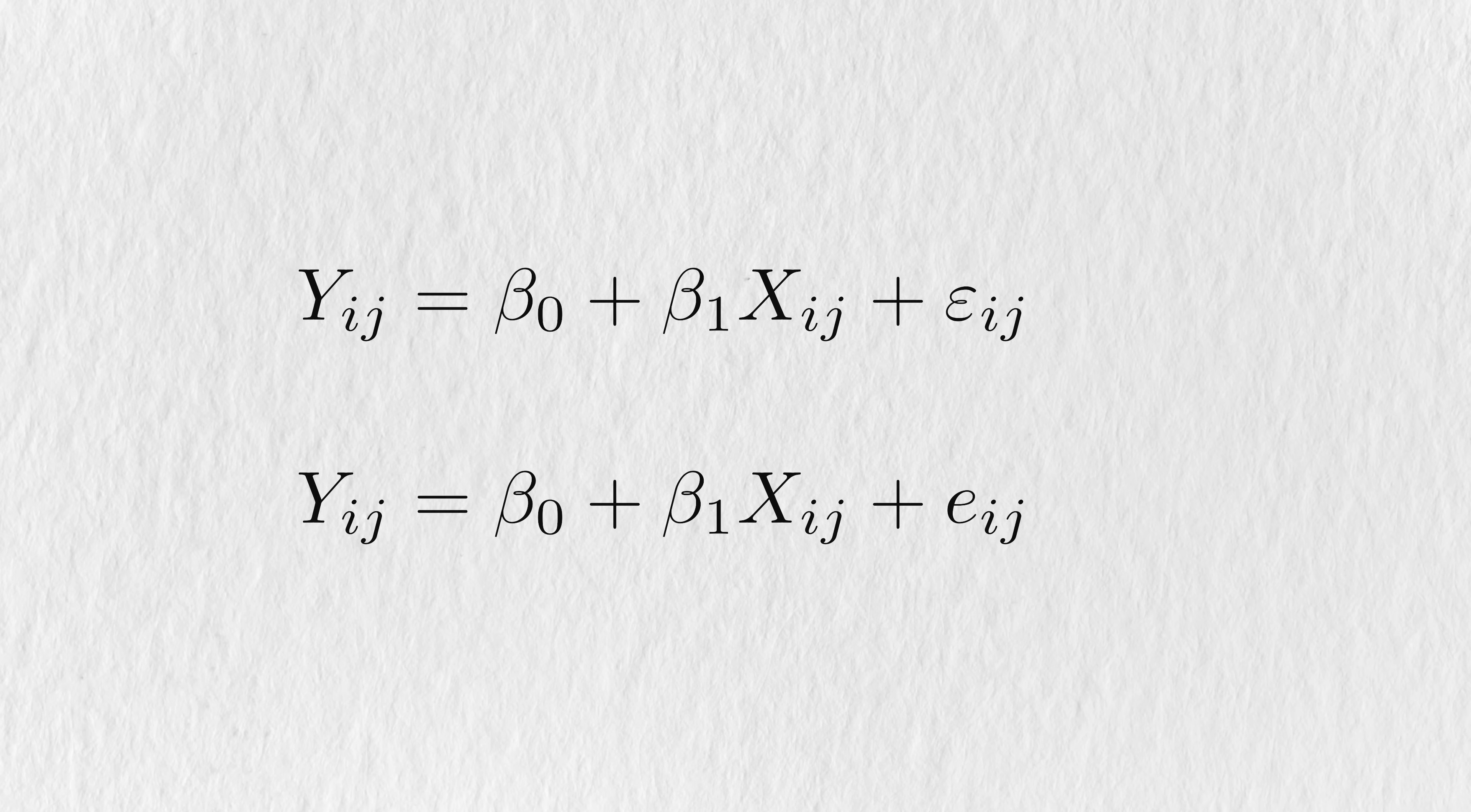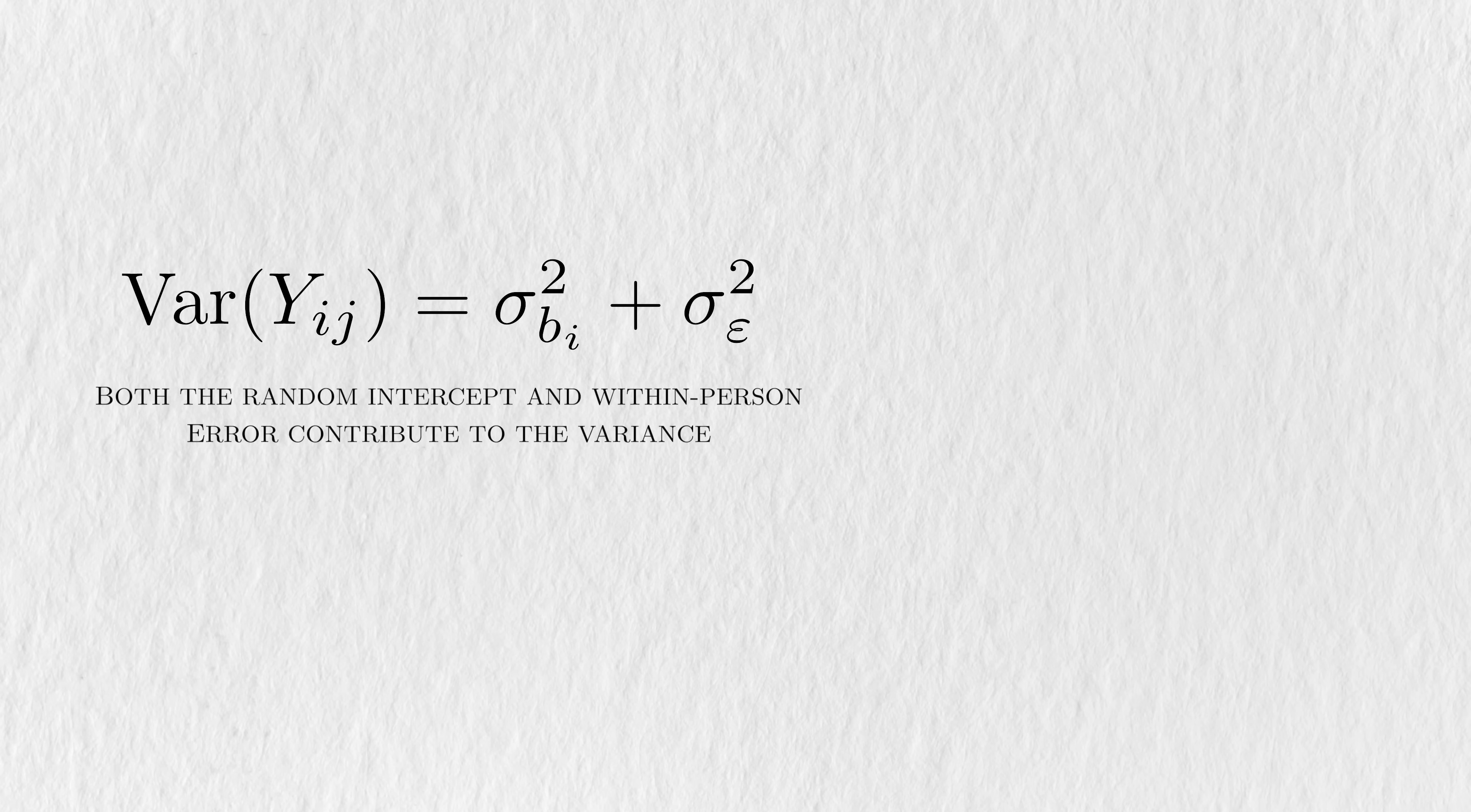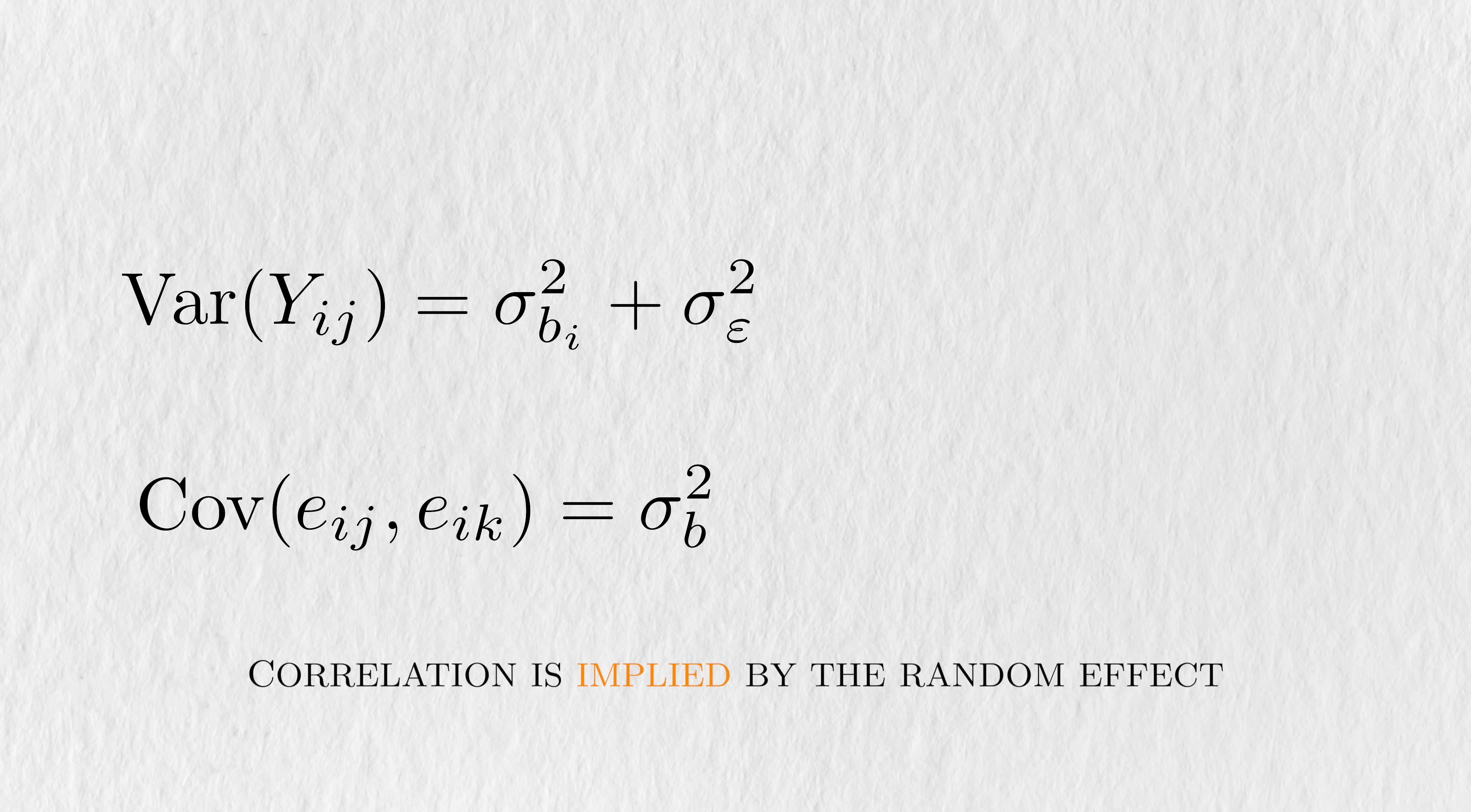If we just group the random intercept and within-person noise together, then the two models will look the same. This breakdown of the noise may seem simple, but it gives us an interesting property. The addition of the random effect increases the variance of the combined noise. No surprise there. There's two terms, so two sources of variance. But it also creates a covariance between any two observations coming from the same person. So, including a person specific random effect creates within subject correlation. Correlation is implied by the random effects.